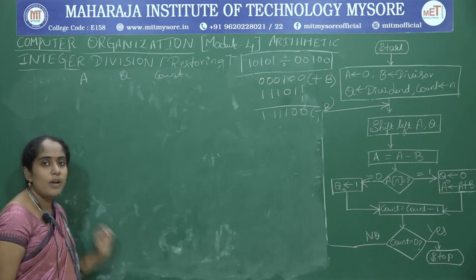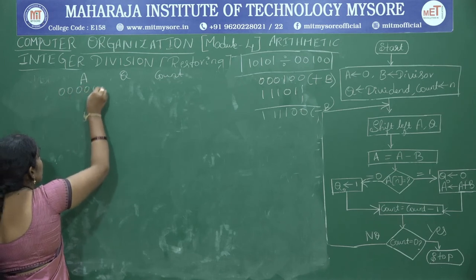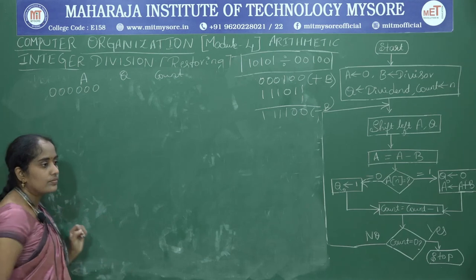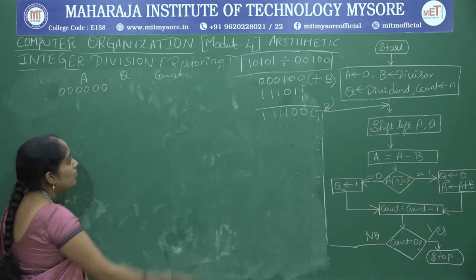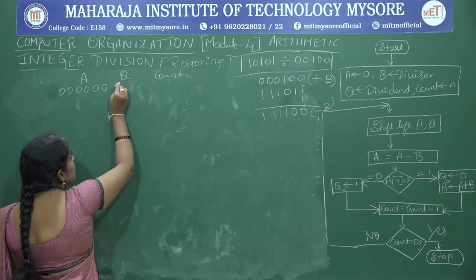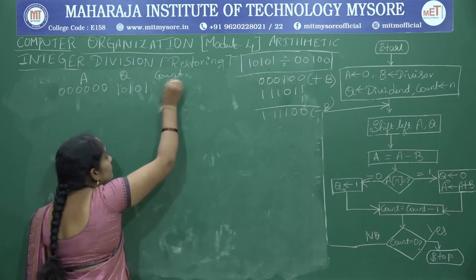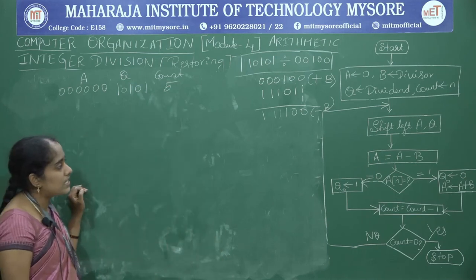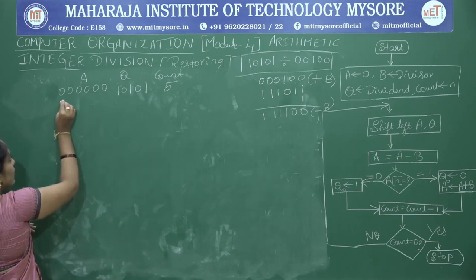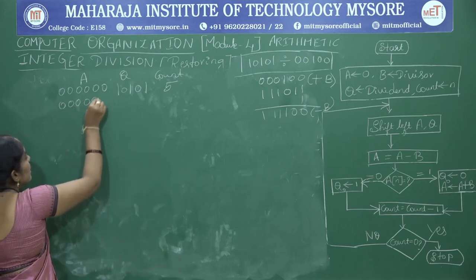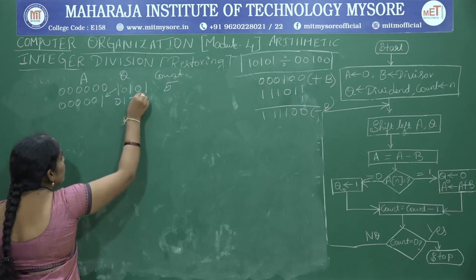A is initialized to 6 zeros. Q equals 10101 and count equals 5. Initialization is complete. Step 3: shift left — A becomes 000001 and Q becomes 01010 with blank. Next, A equals A minus B: minus B is 111100; add to A.